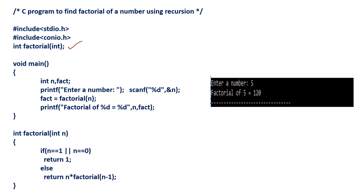In the main function, we have taken the variable n. n is the input variable and fact is the output variable. After reading the n value, we are calling the factorial function in this statement: fact = factorial(n). That means n value is passed to the factorial function.